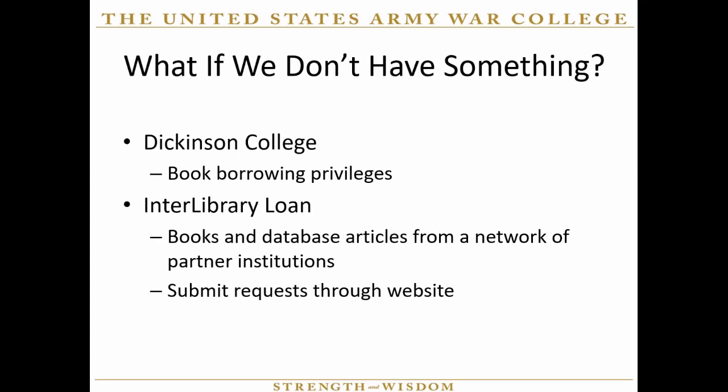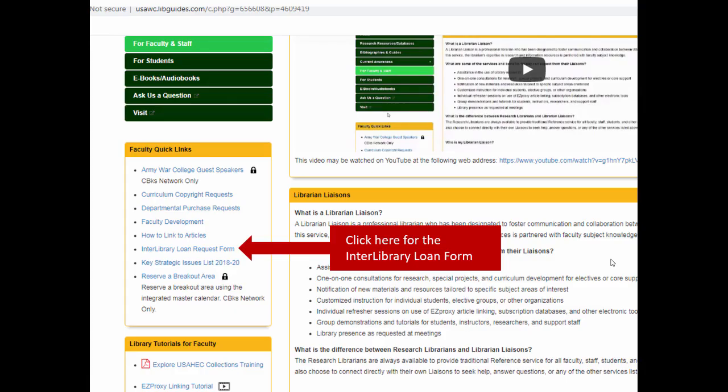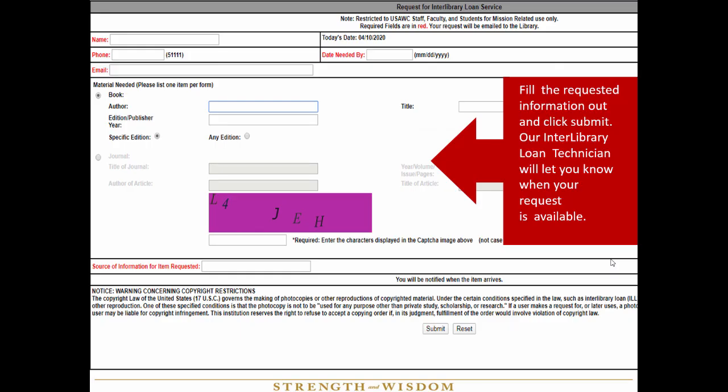If our libraries do not have an item, users have two other ways of obtaining it. They can register as a guest at Dickinson College to check out books, or they can submit a request through our interlibrary loan program, which is a cooperative agreement with a network of other libraries. The form is located here — simply fill out the form and click submit.